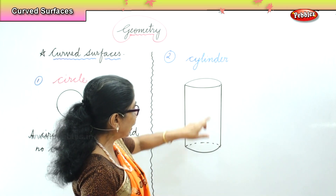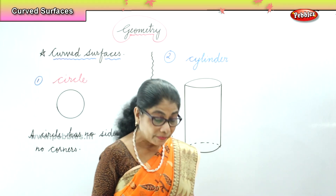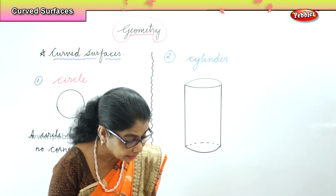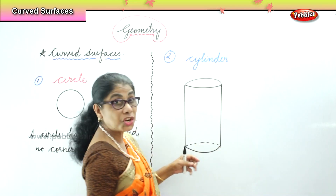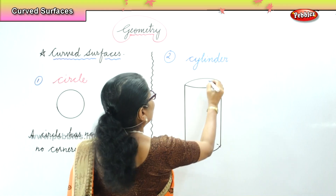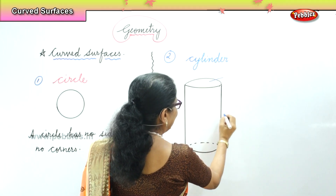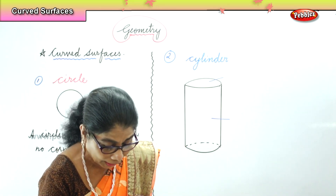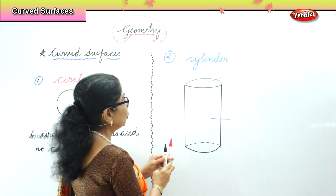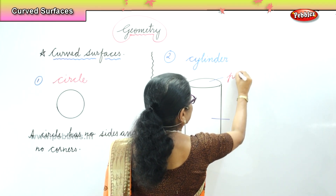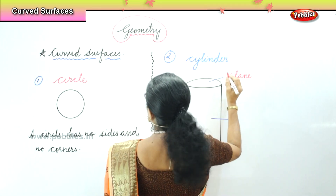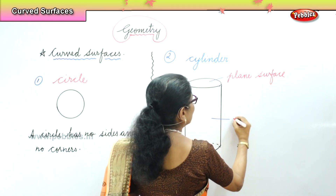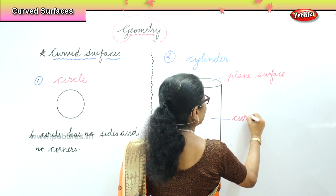What about the cylinder? On the top and at the bottom, we have a plane surface. We have a plane surface and here you have a curved surface. On the top, we have a plane surface and here we have a curved surface. Here you have a plane surface and here you have a curved surface.